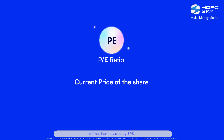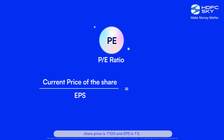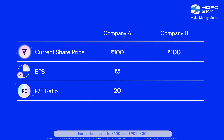PE ratio is calculated as the current price of the share divided by EPS. Let's say company A's current share price is 100 rupees and EPS is 5 rupees, so the PE ratio will be 100 divided by 5, equals 20. Now consider company B, which has a current share price of 100 rupees and EPS of 20 rupees, so the PE will be 100 divided by 20, equals 5.